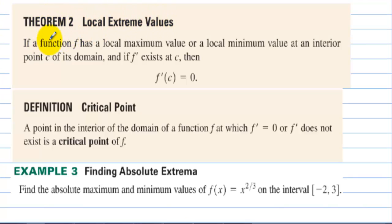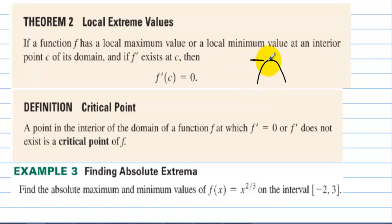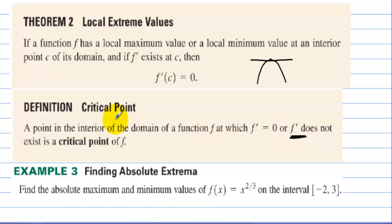Theorem 2 — Local Extreme Values. If a function f has a local maximum or minimum value at an interior point c of its domain, and if the first derivative exists at c, then f'(c) = 0. If we have a min or a max, the slope of the tangent line is zero — the derivative at that point is zero. A critical point is a point in the interior of the domain where f'(c) = 0 or f'(c) does not exist.